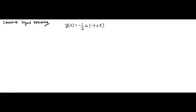This is another question on combined signal operations. The signal is given by y(t) = -½u(-t+2). This is a combined signal operation, and this whole expression can be broken down into many individual signal operations.